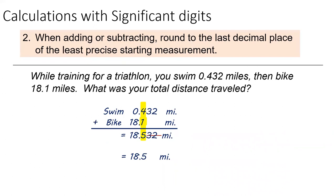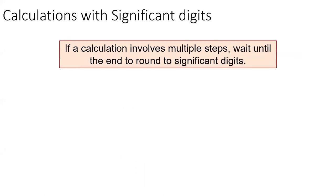In addition and subtraction, you want to line up the decimal places of the measurement and then round the final value to the least precise decimal place. In this case, we're adding a value that is precise to the thousandths place to a value that is precise to the tenths place, and so we will therefore round the final value to the tenths place. Lastly, if a calculation involves multiple steps, please wait until the very end to worry about rounding and sig figs.